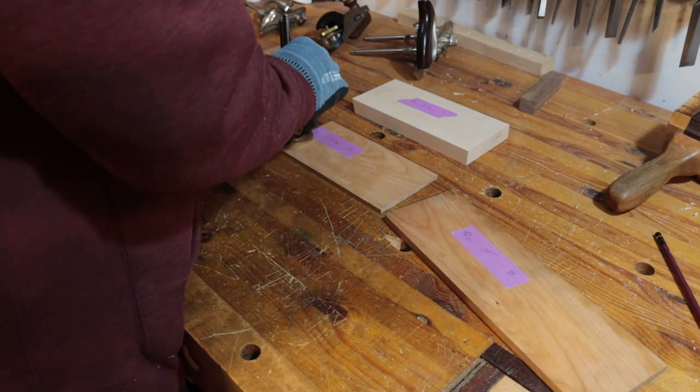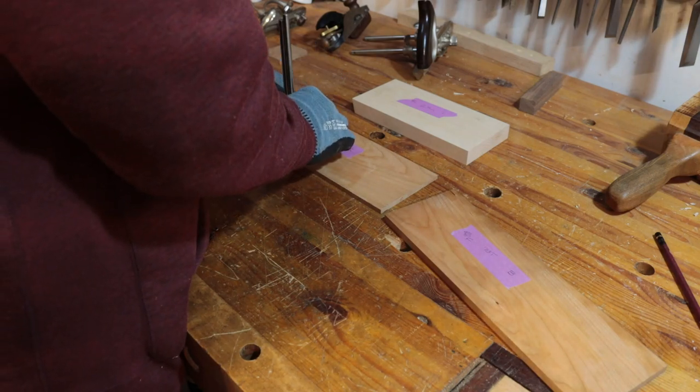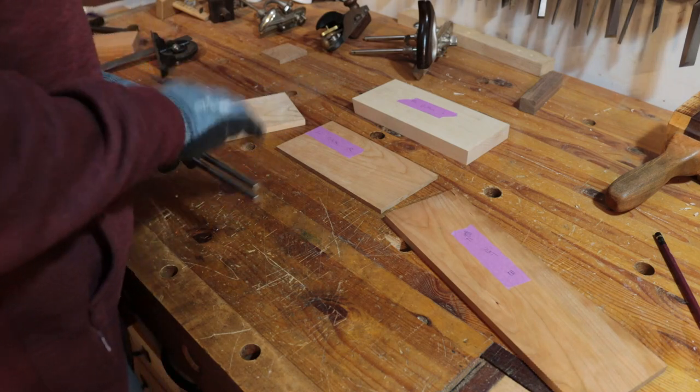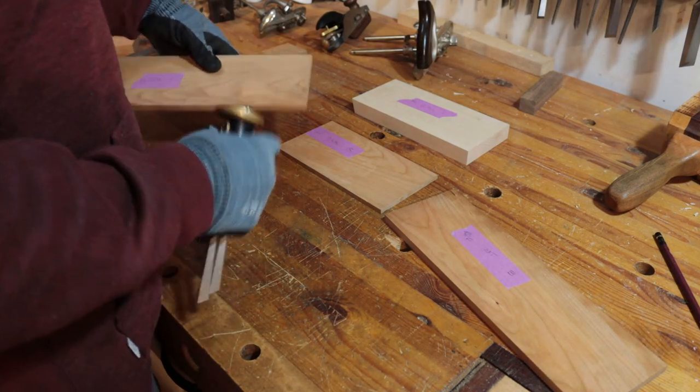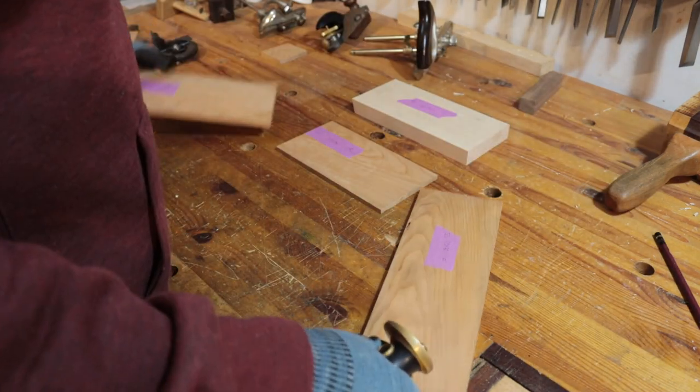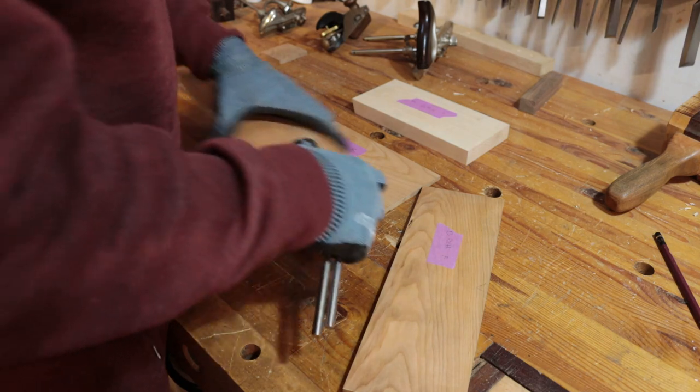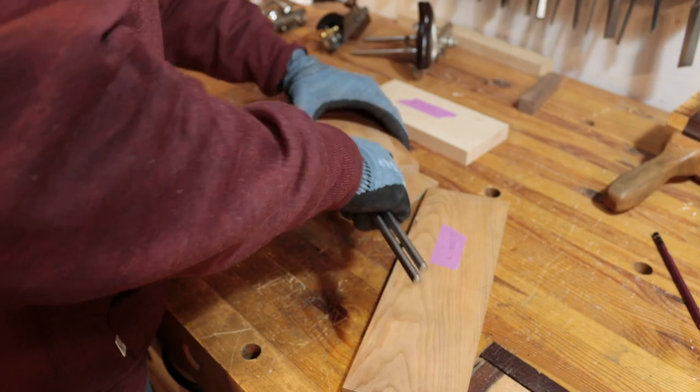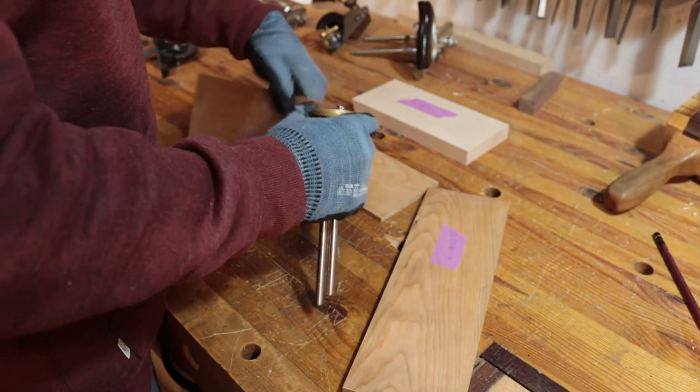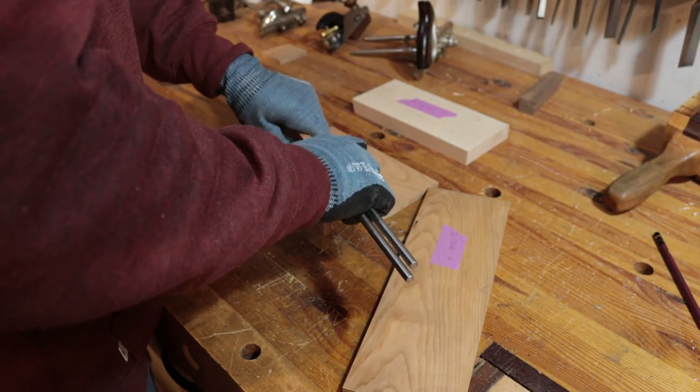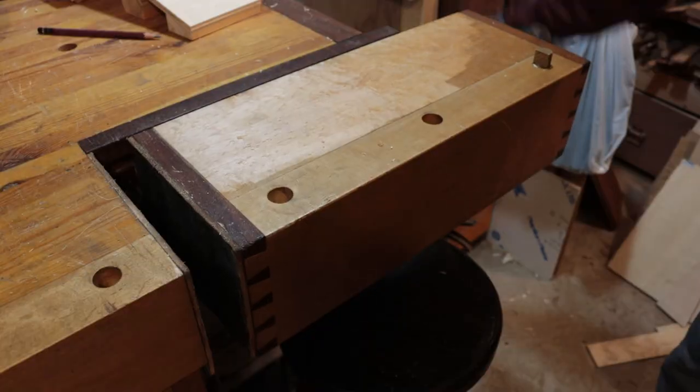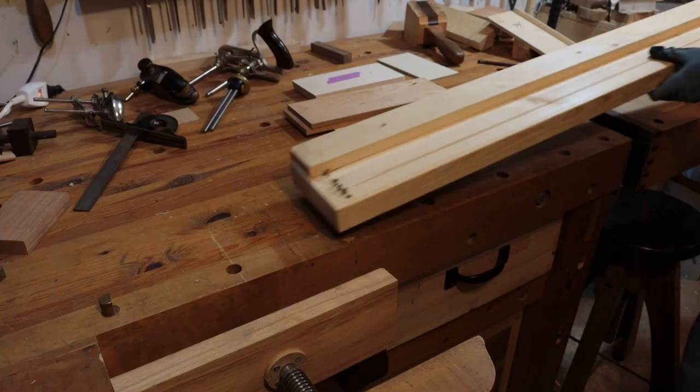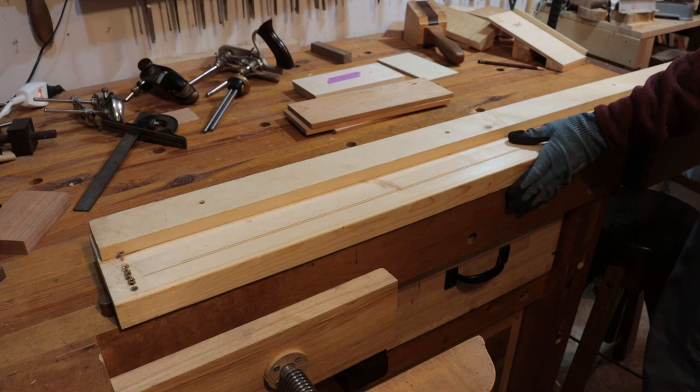I then use my marking gauge to measure the thickness of the back piece so that I can lay out my dovetails. Now I make sure to use the marking gauge on both ends of the back piece when I'm measuring the thickness because these pieces are hand planed and I want to make sure that the dovetails are perfect on both ends. Because they're hand planed one end may be slightly thinner than the other so by using the gauge on both ends that avoids any problems.